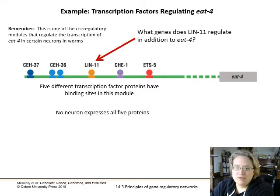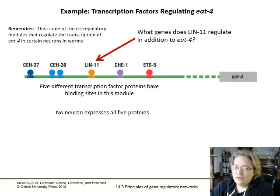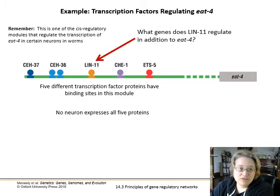For example, we talked about EAT-4 previously, about how it has multiple different transcription factor sites before its main coding region. This is the cis regulatory modules. We have multiple cis regulatory modules and multiple transcription factors that are acting on each of them. If we look at just one of those transcription factors, like LIN-11, it doesn't only affect the transcription of EAT-4 — it affects a bunch of other genes, too.